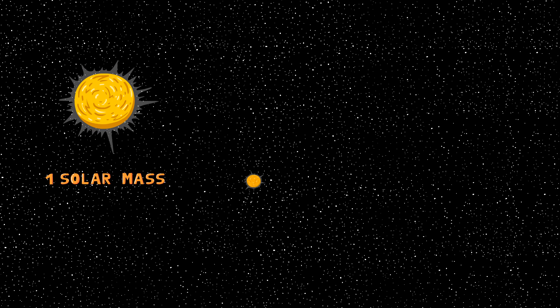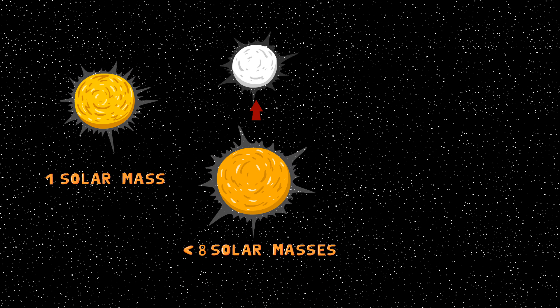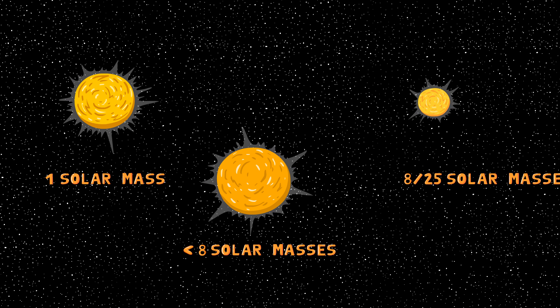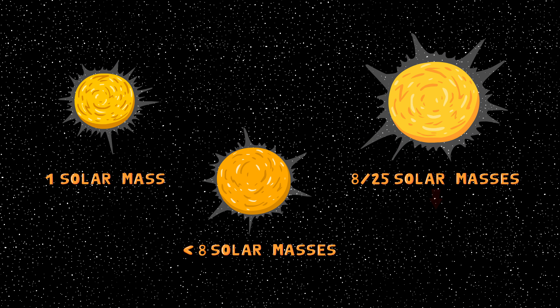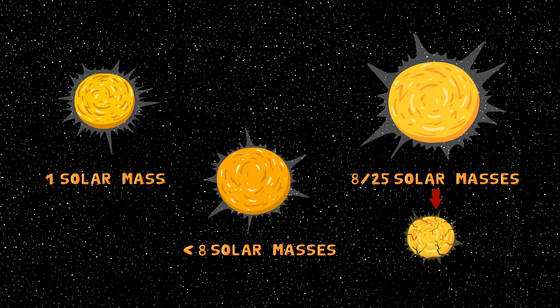One solar mass is the mass of our sun. If a star has less than 8 solar masses, it will become a white dwarf, slowly dying until the end of time. So sad. If a star has between 8 and 25 solar masses, its death will be a supernova. A type 2 supernova, to be more exact.